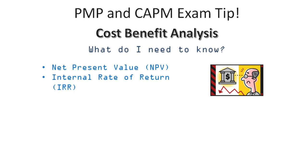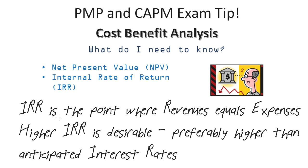Our other analysis method is the internal rate of return. If you think the net present value formula was complex, the IRR formula is even more intense — I'm not even going to share it with you. The point of IRR is it helps determine which projects make more sense. It determines the point where revenues equal expenses, and the goal is to select the projects with the highest IRR. So if we have the choice between two projects — one has a 10% IRR, the other has a 15% IRR — we pick the one with the highest IRR.